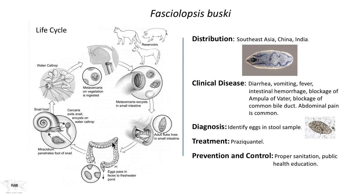The eggs are then passed — it's a self-fertilizing adult. The eggs pass in the feces. The miracidium then hatches in fresh water. It penetrates the appropriate snail host, undergoes a number of reproductive changes inside the snail, and starts producing cercariae, which then exit the snail and swim in the local aquatic environment until they encounter a plant growing at the edge of these ponds. The water caltrop is the dominant plant species ingested to acquire the infection. The clinical disease involves diarrhea, vomiting, fever, and intestinal hemorrhage.